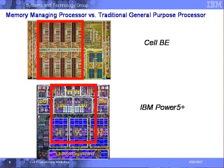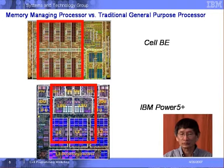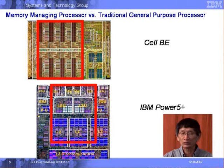Comparing with the Cell BE, we have the SPE processing elements and the PPE processing elements. If we take this real estate and drop it on top of the IBM Power 5 Plus, we can see how much real estate the Cell BE takes compared to the Power 5 Plus. We eliminate all those L3 memory controllers, almost half of the L2, and all of those FPUs and PPUs.